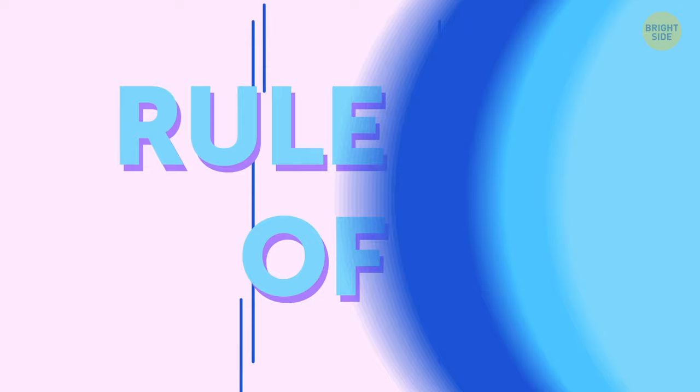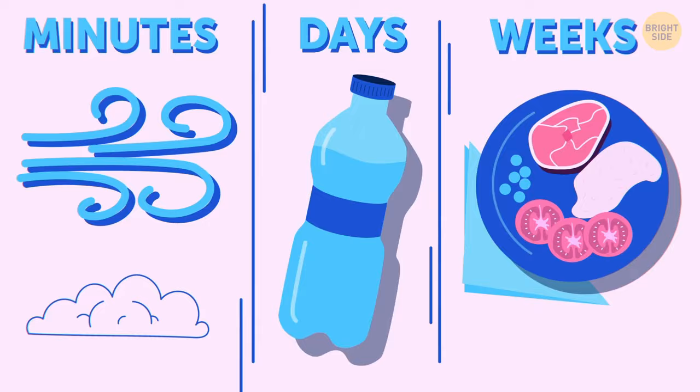The rule of threes states that the human body can go three minutes without air, three days without water, and three weeks without food. But not three seconds without the internet.